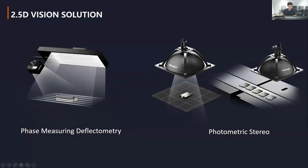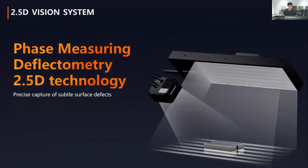Today I will focus on two different 2.5 dimension vision solutions. The first technology is called Phase Measuring Deflectometry, and the second one is called Photometric Stereo. I will start with the Phase Measuring Deflectometry 2.5 dimension technology.